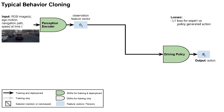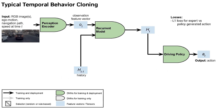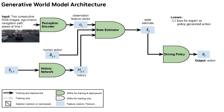A typical behavior cloning architecture may look like this, where the inputs go through a perception encoder that generates a feature vector, which is then used by the policy to generate output actions. The model can be extended to accumulate temporal history by adding a recurrent model. Our end-to-end trainer aggregates states over time using a history model.